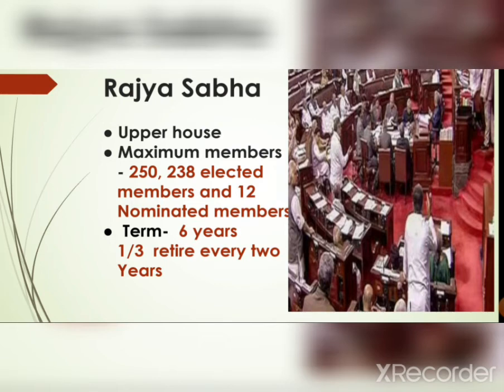Fresh members are elected, and the Rajya Sabha is headed by the Vice President of India. So to summarize: the Lok Sabha is known as the Lower House or House of the People, and the Rajya Sabha is known as the Upper House of the Parliament, whose members are not directly elected by the people.